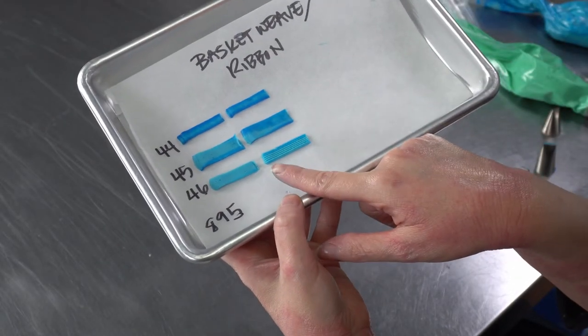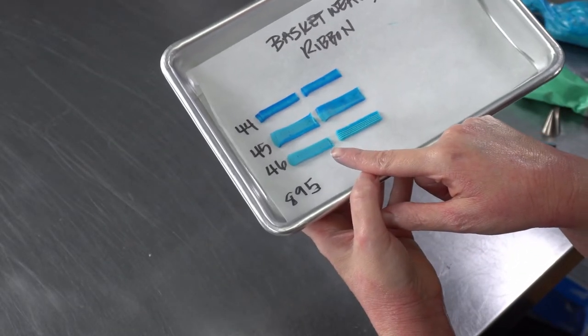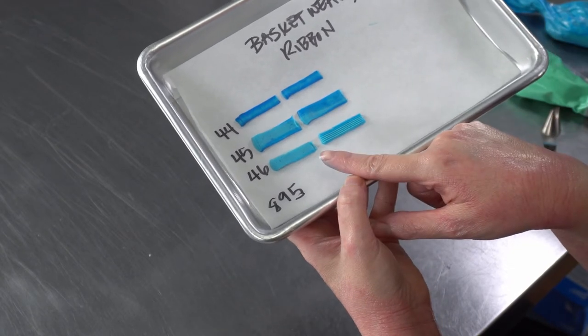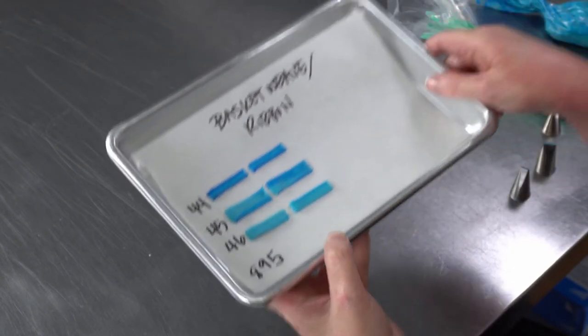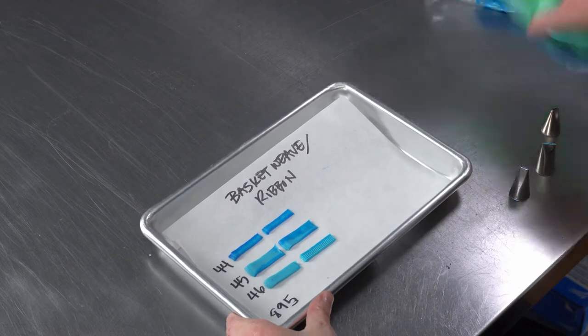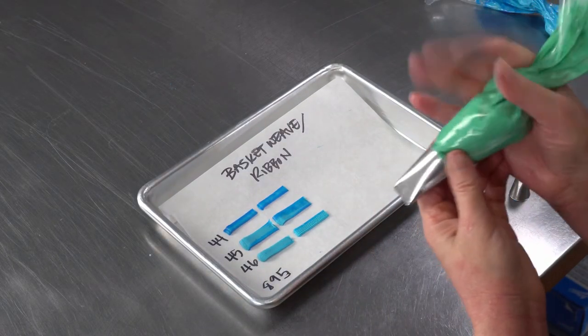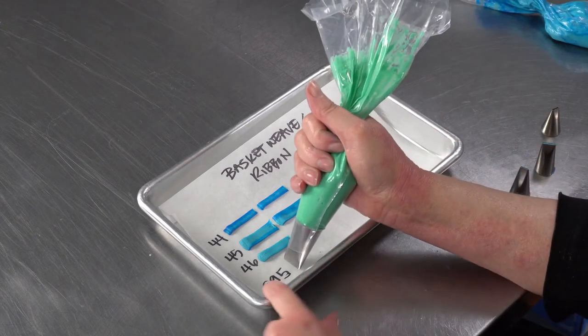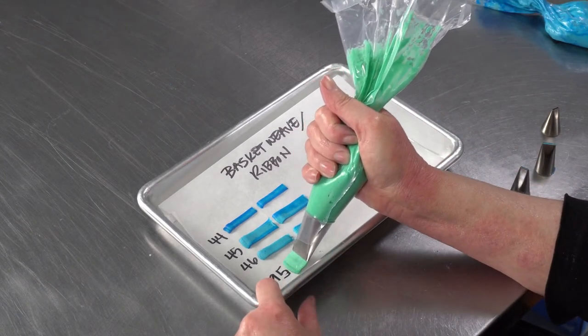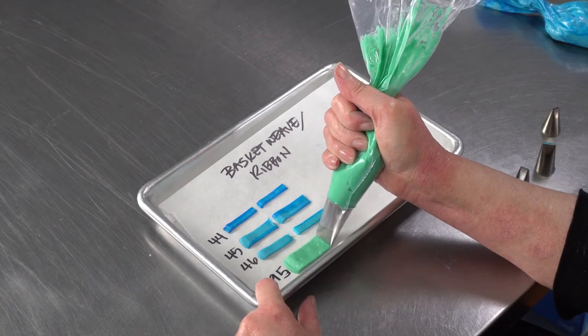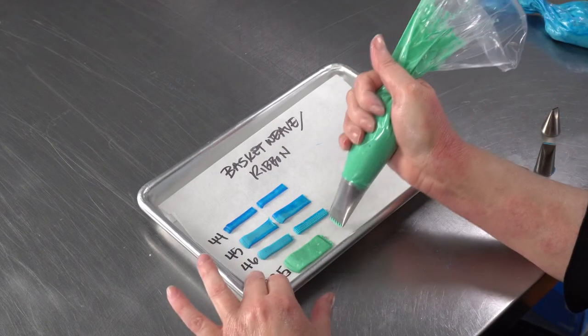You can use this tip and flip it back and forth to create a varied look to your piping. The number 895 is the same. It is flat on one side and has the comb on the other. This is just a larger size of the same kind of tip.